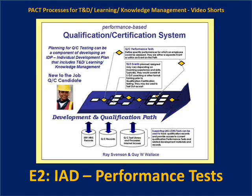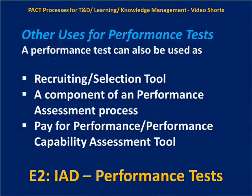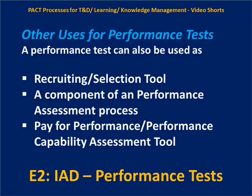Qualification and certification systems and tests can be used for many purposes. They can be part of a recruiting and selection process, a training and development process, or a performance review and feedback process. They can also be tied to a pay progression program, where the capability to perform is what the organization is willing to pay for — not reflecting on what one did in the past, but what one is capable of doing should the need arise. For example, if people are being paid to be firefighters, we hope there's never a fire, but if we've tested them and know they can fight a fire, we might pay for that capability to be at the ready inside the enterprise.